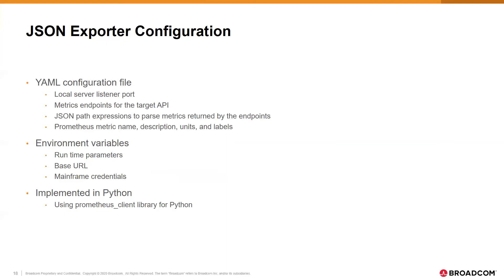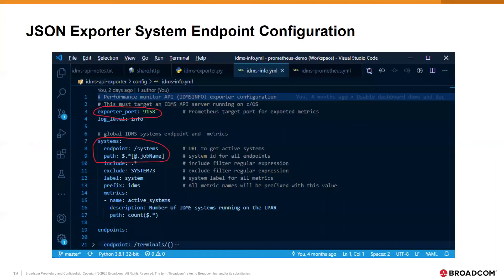Runtime settings, including the base URL of the performance monitor API and the user's mainframe credentials, are specified in environment variables. The exporter is implemented using the Prometheus client libraries for Python, which provide modules for an HTTP server that Prometheus calls to get the metrics. The configuration file specifies the exporter listener port, the endpoint to get a list of active systems, and the JSON path expression to get the identifier for each system. Although the example is specific to IDMS, the exporter could be used with any API that has endpoints to identify product instances and detailed metrics.